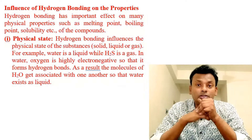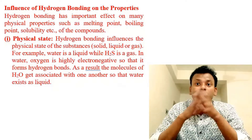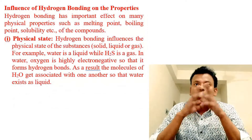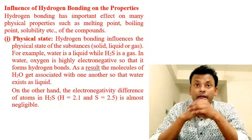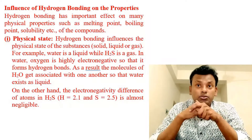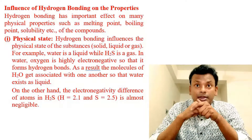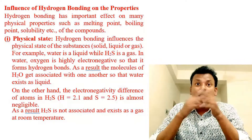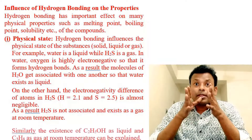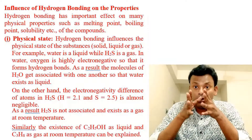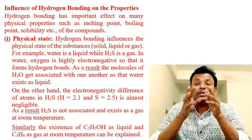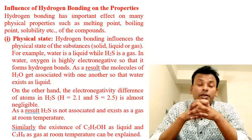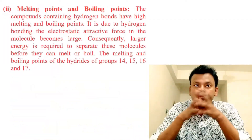As a result, the molecules of H₂O get associated with one another so that water exists as a liquid. On the other hand, the electronegativity difference of the atoms in H₂S is almost negligible. As a result, H₂S does not associate and exists as a gas at room temperature. Similarly, the existence of ethanol as a liquid and propane (C₃H₈) as a gas at room temperature can be explained by hydrogen bonding.